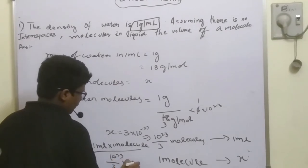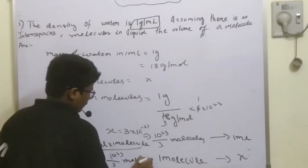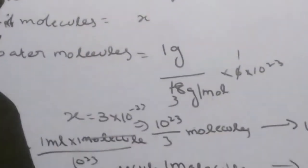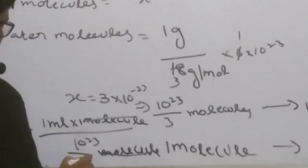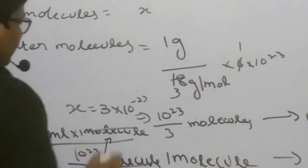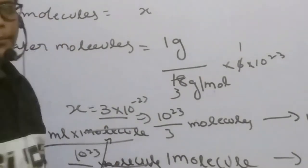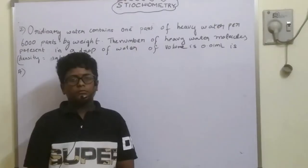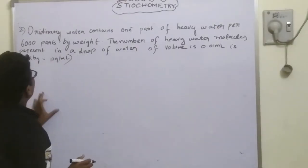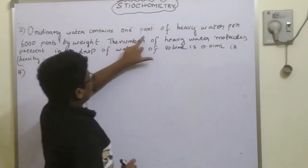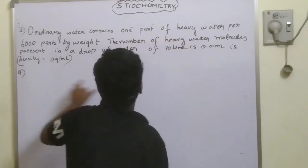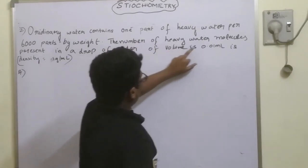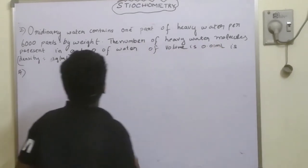This gives X equals 3 into 10 to the power of minus 23 mL per molecule, as the denominator moves to the numerator. The second problem: ordinary water contains 1 part of heavy water per 6000 parts by weight. The number of heavy water molecules present in a drop of water of volume 0.01 mL is to be found.